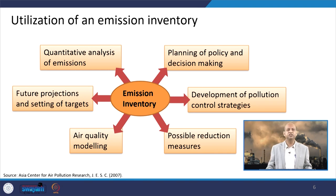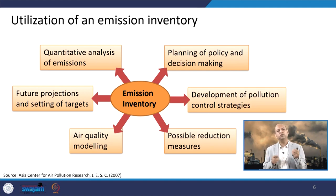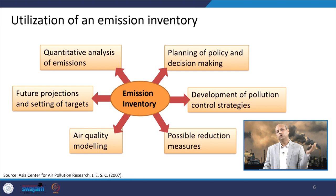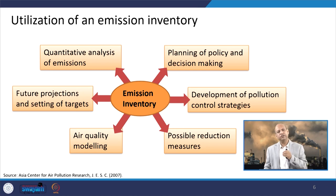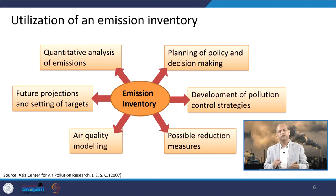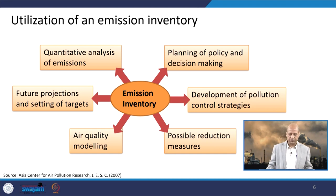The utilization of emission inventory is manifold. It can be used for planning of policy or decision making — for example, in Delhi changing public transport to CNG was implemented. Emission inventories help estimate how much reduction in particulate matter will result. If you want to convert road vehicles to electric vehicles, these inventories tell you what the non-exhaust emissions will be from road dust or tires, and how exhaust emissions change as per the policy and programmes.